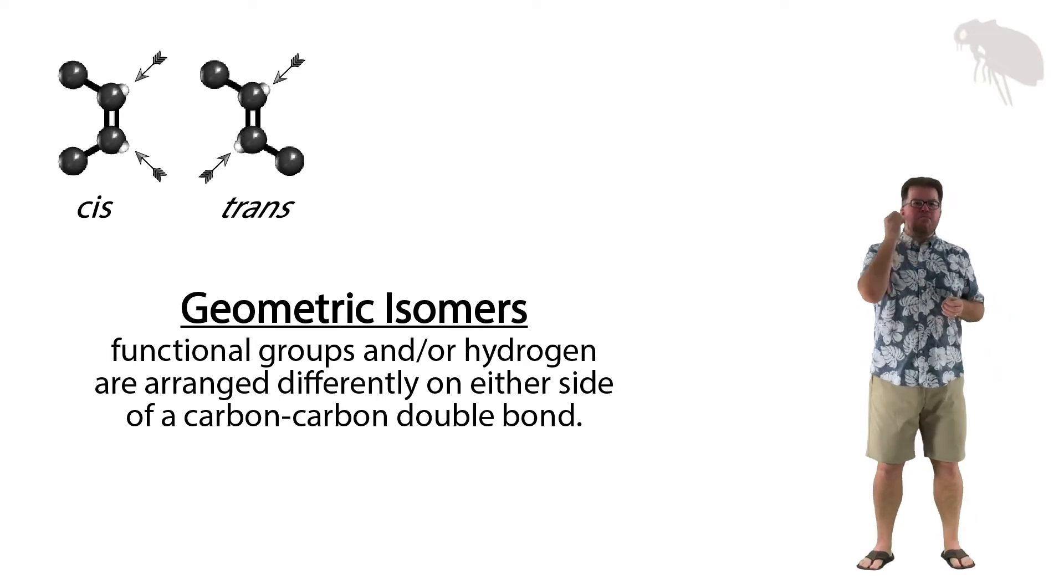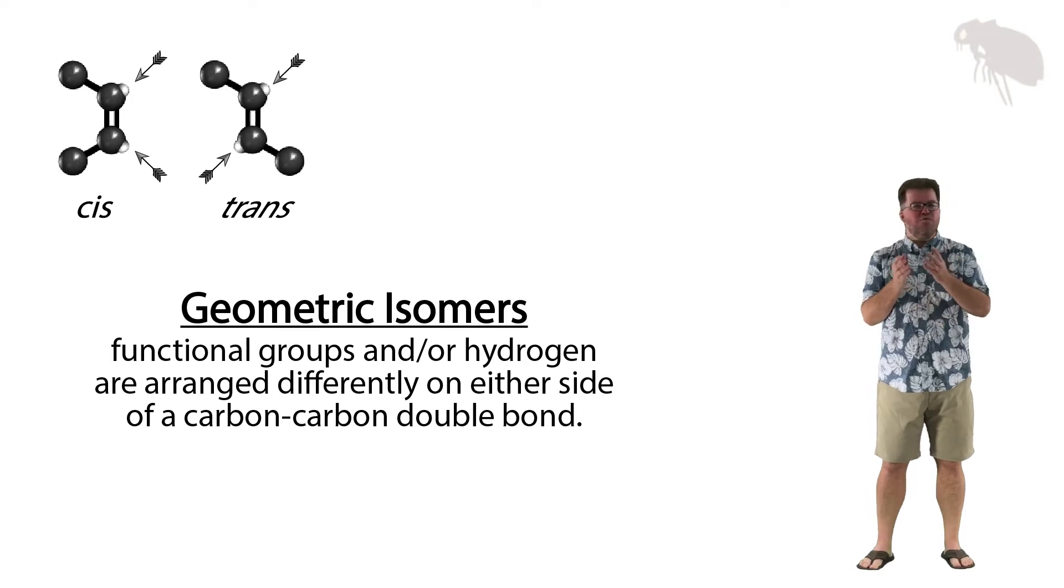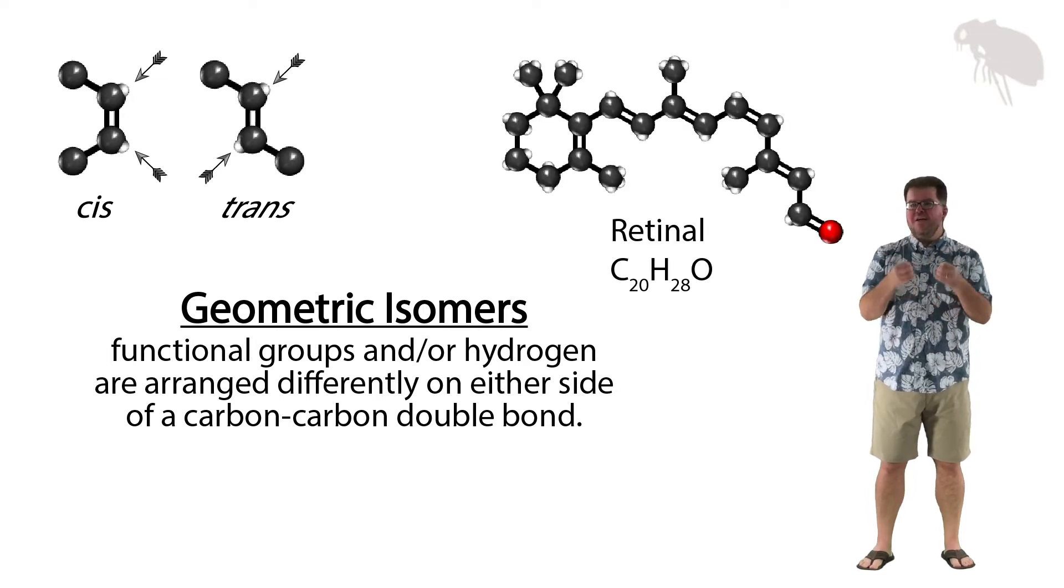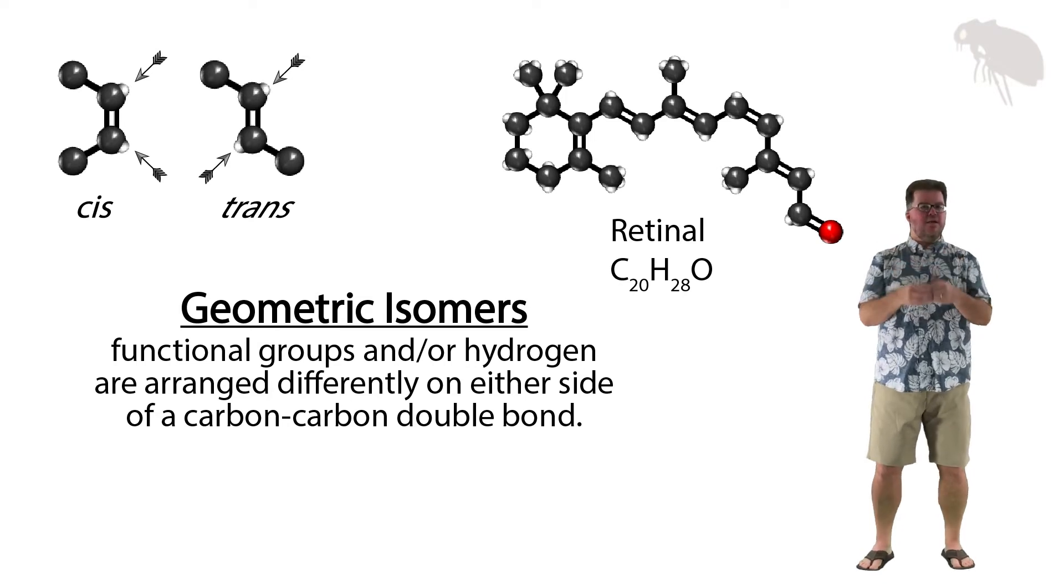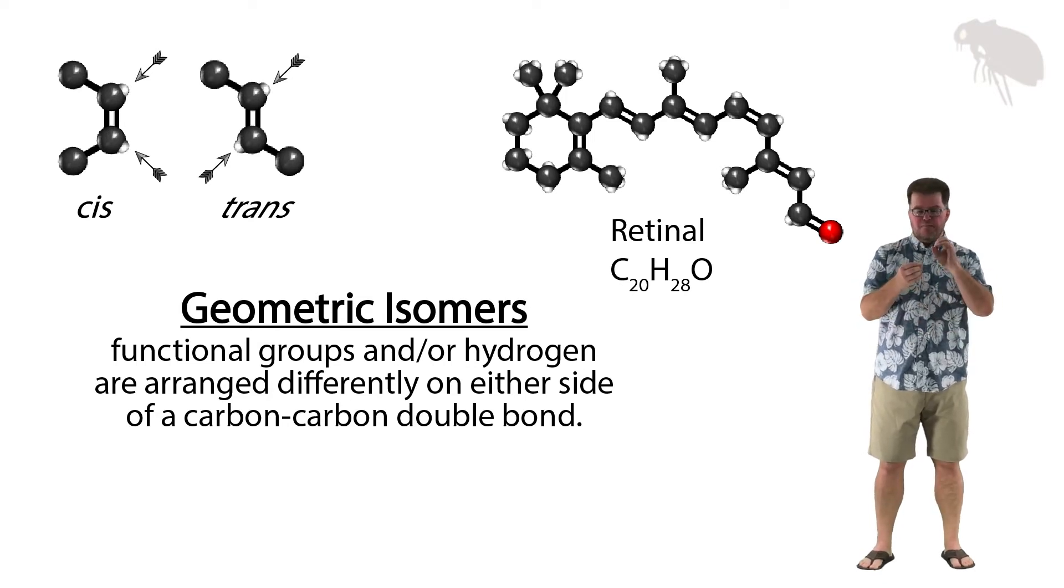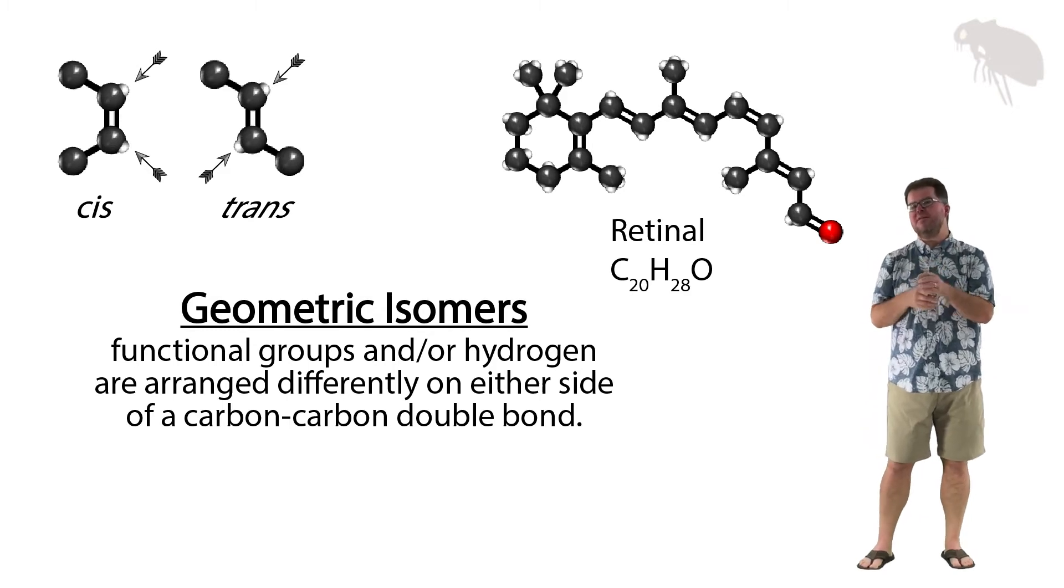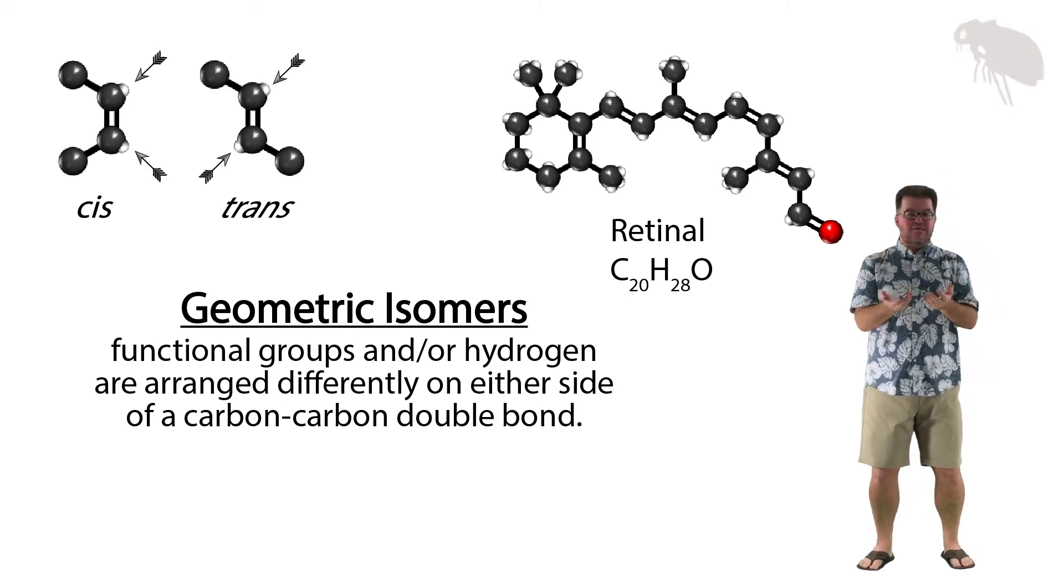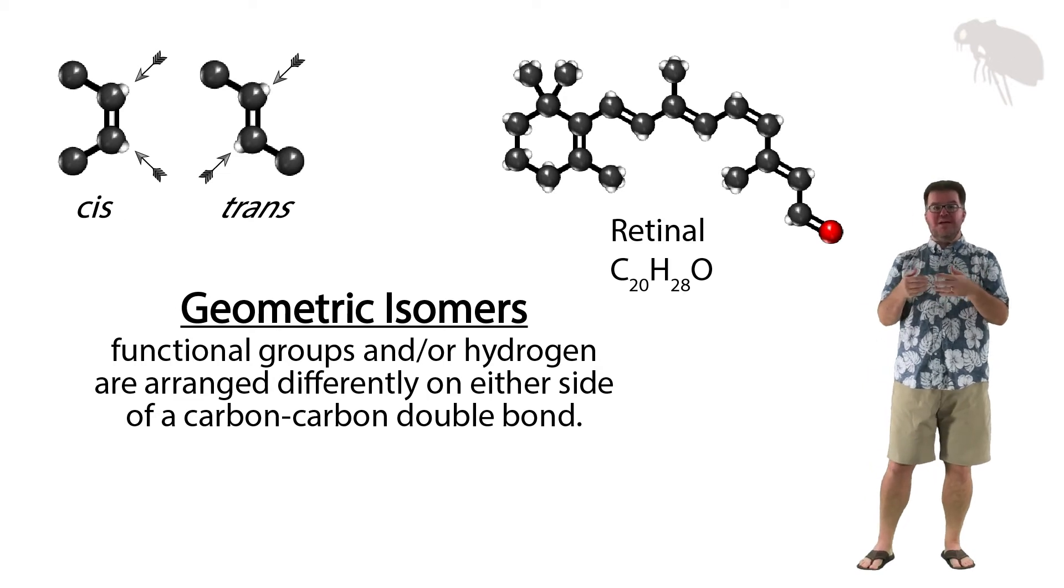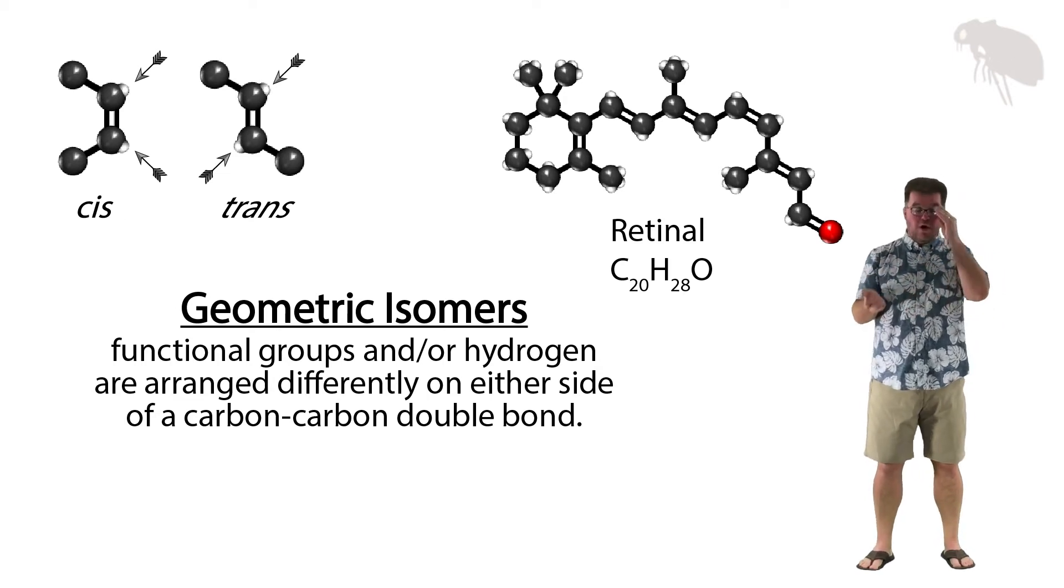So let's look at an example. In the case of retinol, retinol is a molecule found in the rod cells of your eye. It's a pigment that's located within a protein molecule called rhodopsin, and retinol is light sensitive and it alternates between a cis and a trans isomer. Now what we're seeing here is the cis isomer.